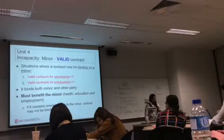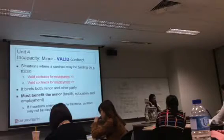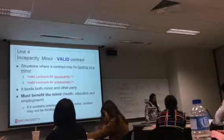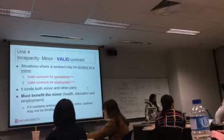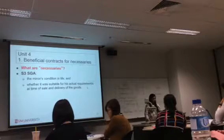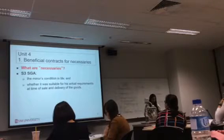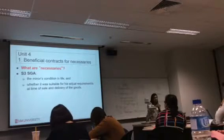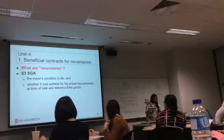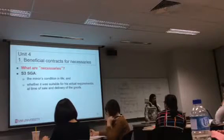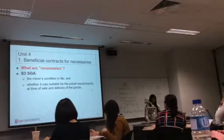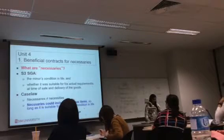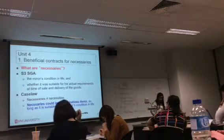However, if the contract has terms that are exploitative — onerous terms — where the minor feels oppressed and is being exploited, then the contract may not be binding; there are cases on this. So what are necessaries? Section 3 of the Sale of Goods Act (SGA). The goods must be necessary for that minor's condition in life, and whether it was suitable for its actual requirement at the time of sale and delivery of the goods. Necessaries can include luxurious items, so long as it's suitable for that particular minor — for a rich man's son, gold items may be necessaries.